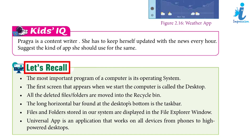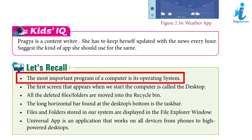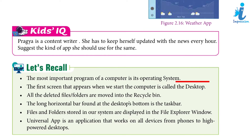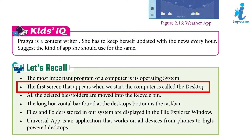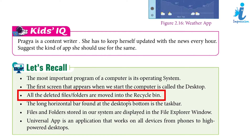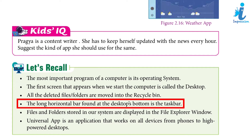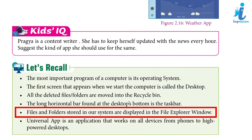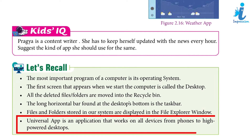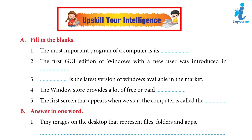Let's Recall: The most important program of a computer is its operating system. The first screen that appears when we start the computer is called the desktop. All deleted files and folders are moved into the Recycle Bin. The long horizontal bar found at the desktop bottom is the taskbar. Files and folders stored in our system are displayed in the File Explorer window. A universal app is an application that works on all devices from phones to high-powered desktops.